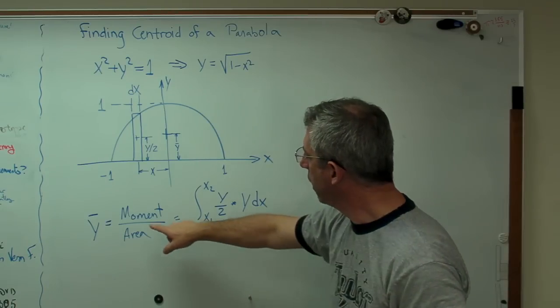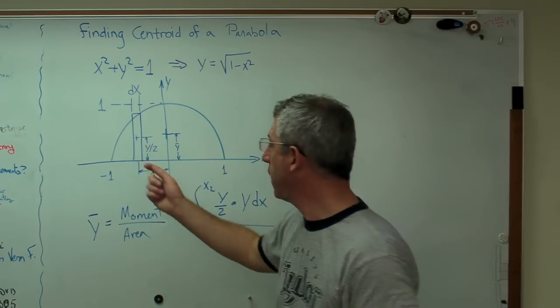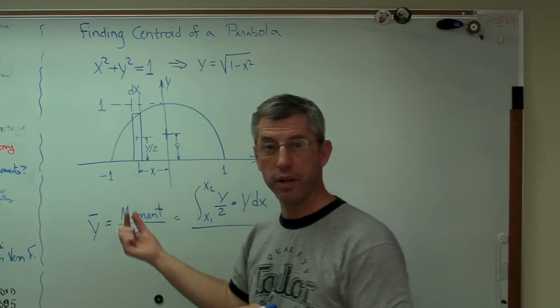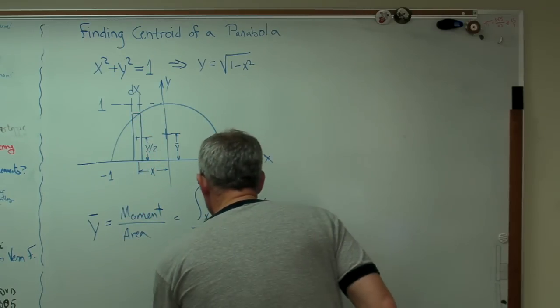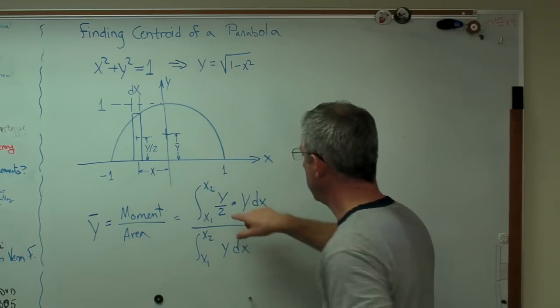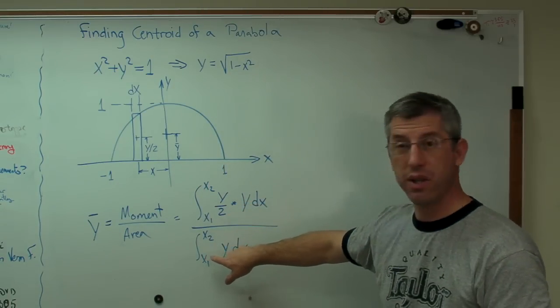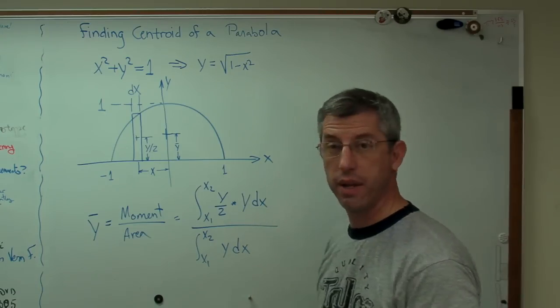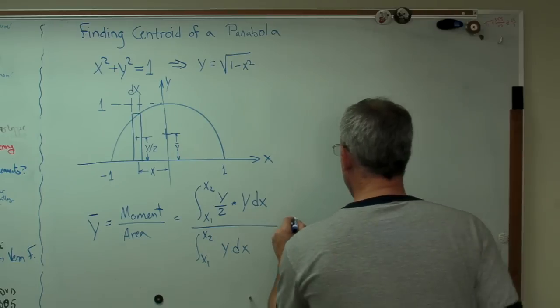And down here, I want all the areas. So I'm going to add up all the y's times all the dx's. And you can see that's moment and that's area. That's just the area under the curve. That's all there is to this.